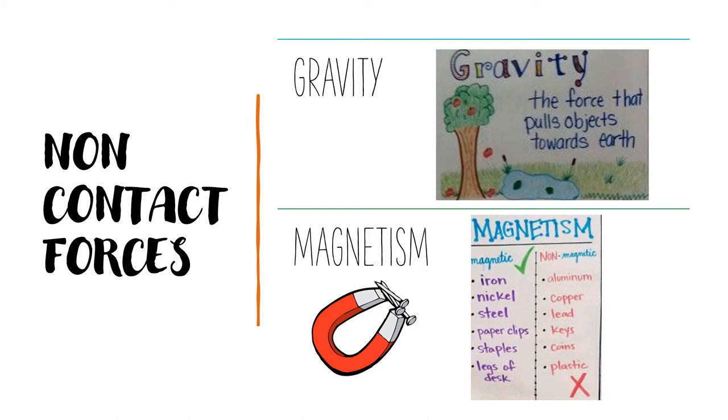And magnetism. Magnets attract metals or metallic objects. Here is a list of magnetic metals like iron, nickel, steel, paper clips, staples, and legs of a desk.